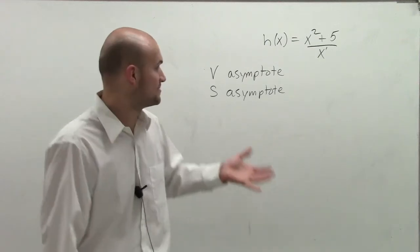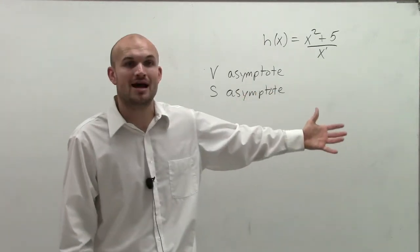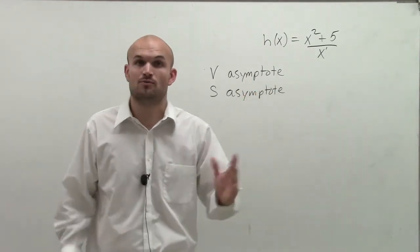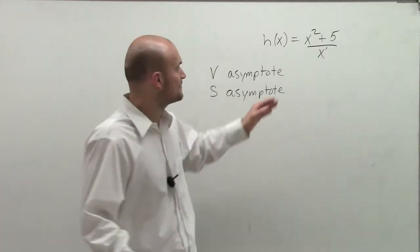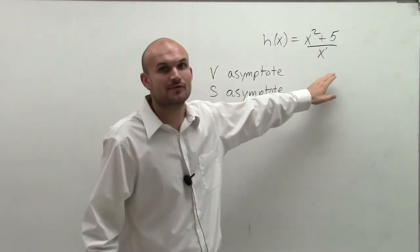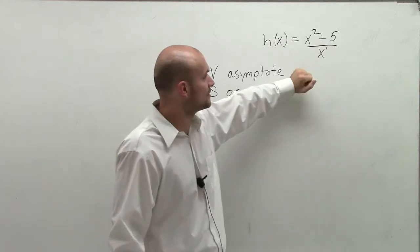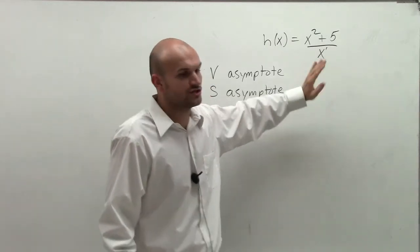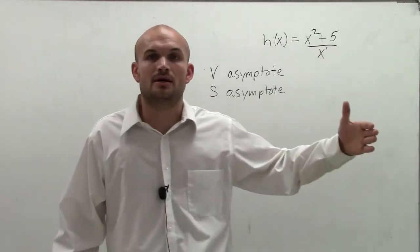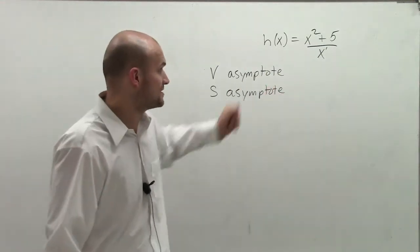Now remember, vertical asymptote is going to be our constraints on our graph for our x values. What can our x values not be? And when we look at it, we look at the constraints for our vertical asymptote. The only vertical asymptote that I can see would be, or constraints on our x values would be, when our denominator is equal to 0 for this function.